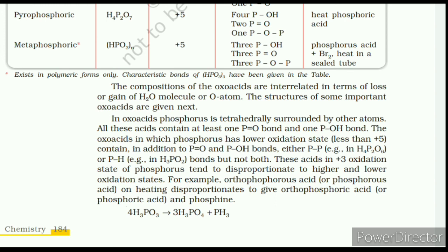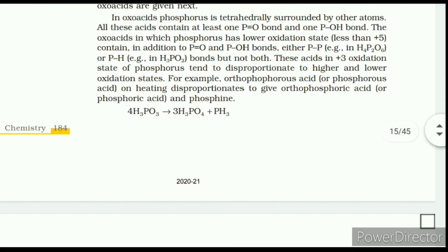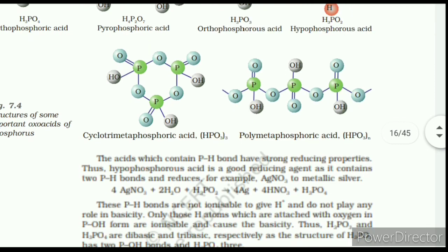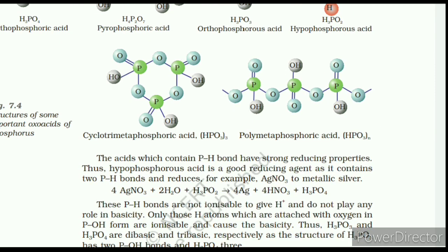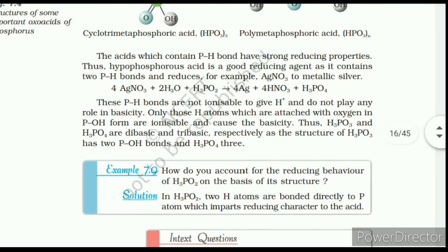Hypophosphorous acid is a strong reducing agent as it contains two P–H bonds and reduces, for example, AgNO₃ to metallic silver. These P–H bonds are not ionizable to give H⁺ and do not play any role in basicity. Only those H atoms attached with oxygen in P–OH form are ionizable and cause basicity. Thus H₃PO₃ is dibasic and H₃PO₄ is tribasic, as the structure of H₃PO₃ has two P–OH bonds and H₃PO₄ has three. Example 7.9: How do you account for the reducing behavior of H₃PO₂ on the basis of structure? In H₃PO₂, two H atoms are bonded directly to the P atom, which imparts reducing character to the acid.